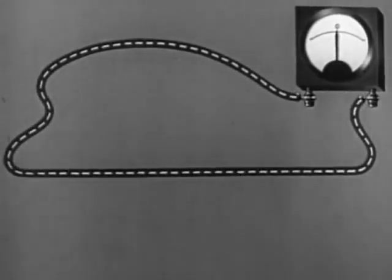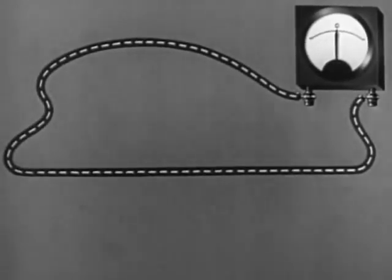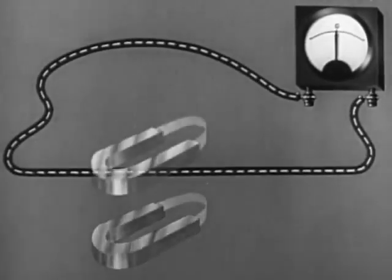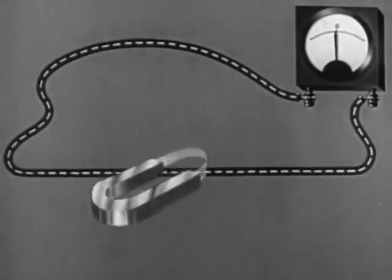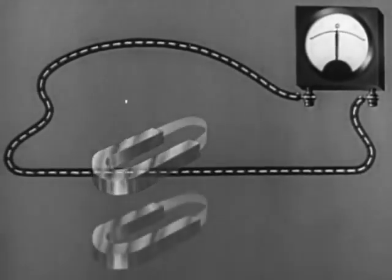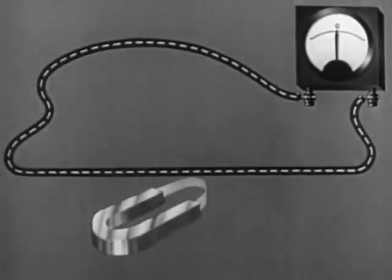If this wire is connected to a meter, we find there is no electric current flow. When the magnetic field is moved down, this meter shows current flow in one direction. If the magnetic field is moved up, the meter shows current flow in the opposite direction.